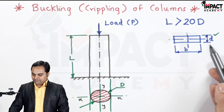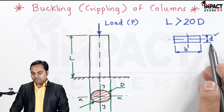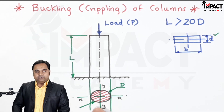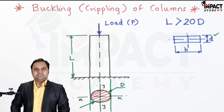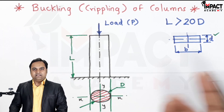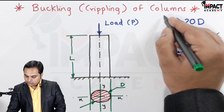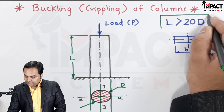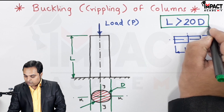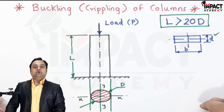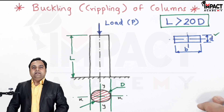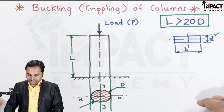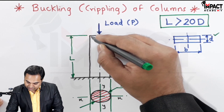If the length is greater than 20 times the least lateral dimension, then it would be called a long column. In the circular column case, there is only one diameter which is constant. If it is a long column, then it would be treated as a long column, and a long column fails — it buckles or gets crippled — and that crippling is shown in the figure.